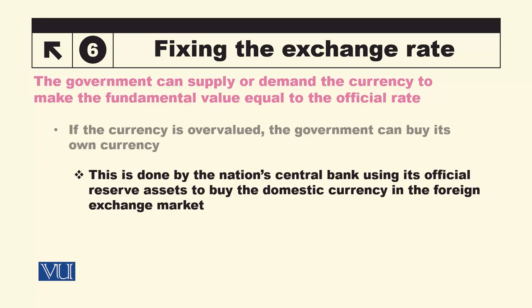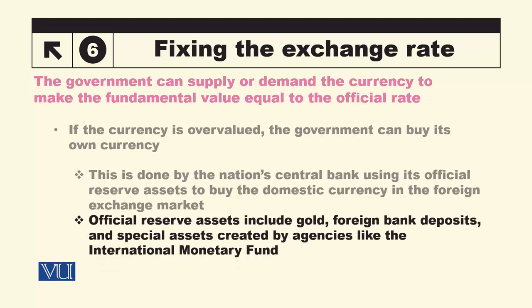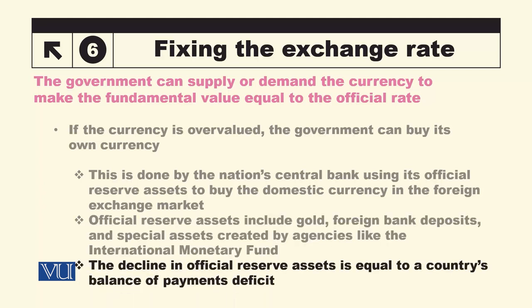The central bank buys the domestic currency in the foreign exchange market using its official reserve assets, thereby increasing demand for the currency. Official reserve assets include gold, foreign bank deposits, and special assets created by agencies like the IMF. The decline in official reserve assets is equal to the country's balance of payment deficit.